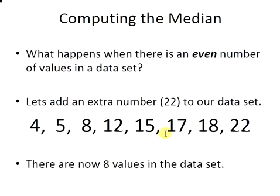Now what happens when there is an even number of values in the data set? What we are going to do is add an extra number, 22, to our data set. Importantly, the data set is still ordered, it's still in ascending order, and there is an even number of values in the data set now, there are 8 values.